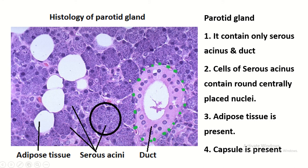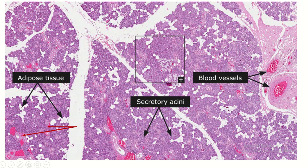The staining of the serous acini is more than the duct. The serous acini cell contains round nuclei. The parotid gland also contains some adipose cells — these are the adipose cells. The parotid gland is covered by a capsule.